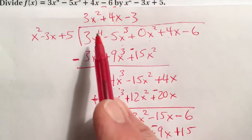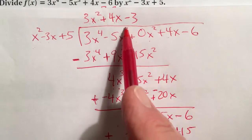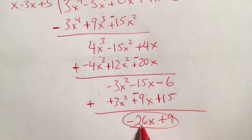That is the remainder. So our quotient is 3x^2 plus 4x minus 3. The remainder is negative 26x plus 9.